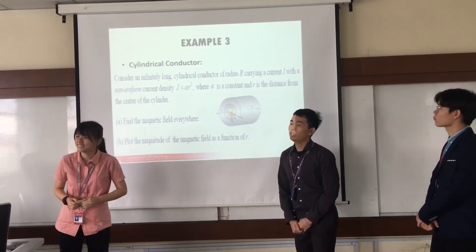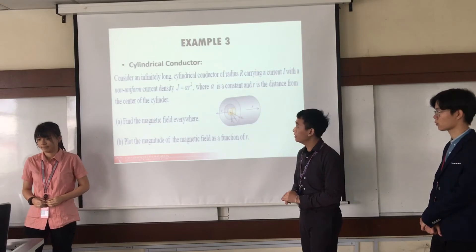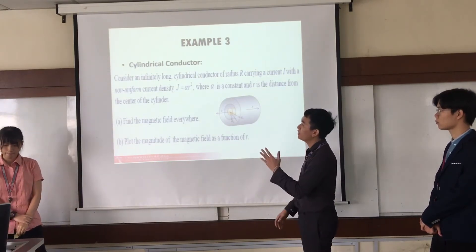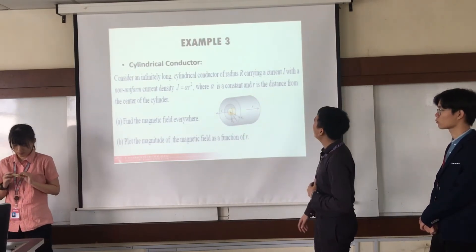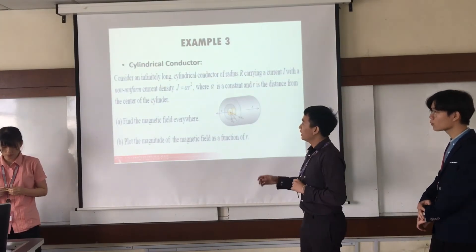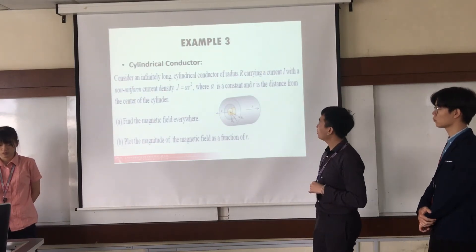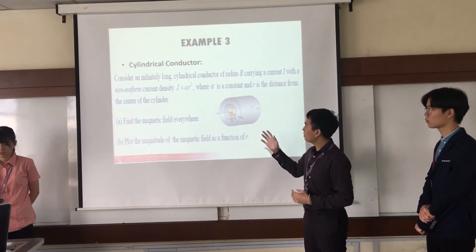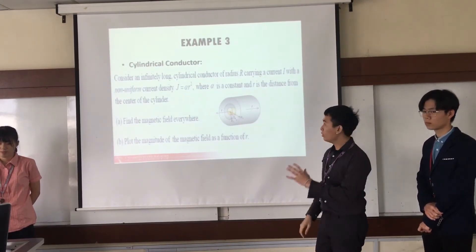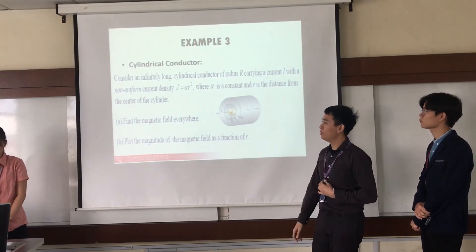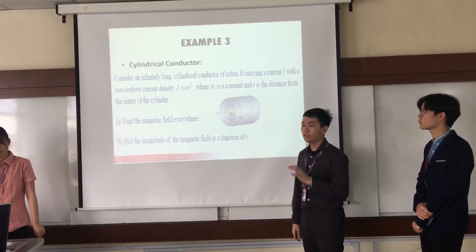Hello everyone, today I will present Example 3: the cylindrical conductor. The question asks us to consider an infinitely long cylindrical conductor of radius R, carrying a current I with a non-uniform current density J equals α r², where α is a constant and r is the distance from the center of the cylinder. We have to find the magnetic field everywhere and plot the magnitude of the magnetic field as a function of r.